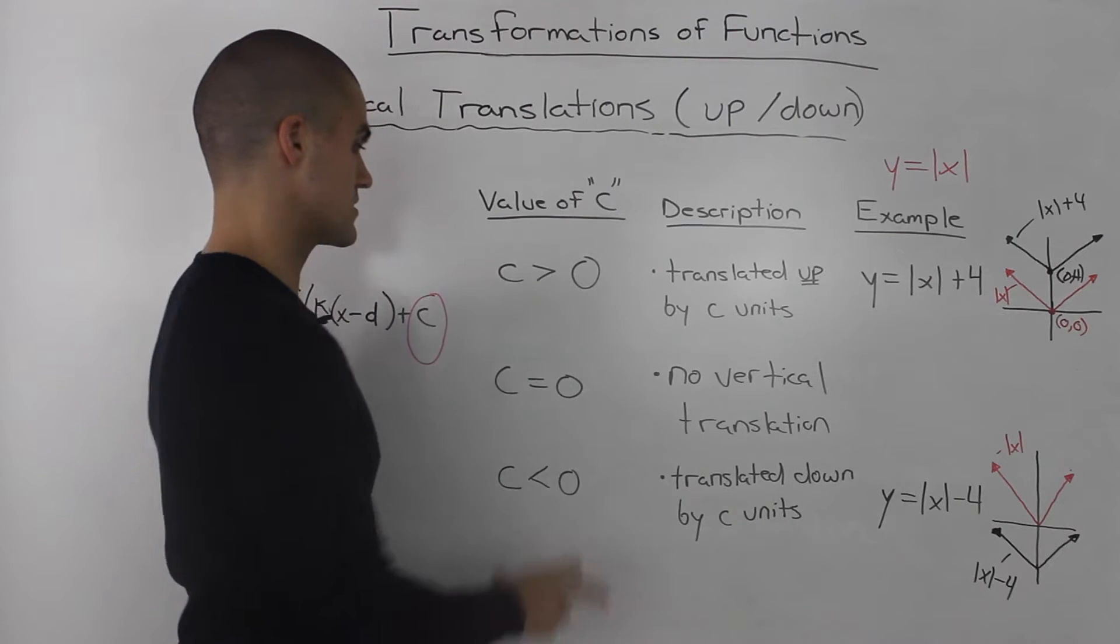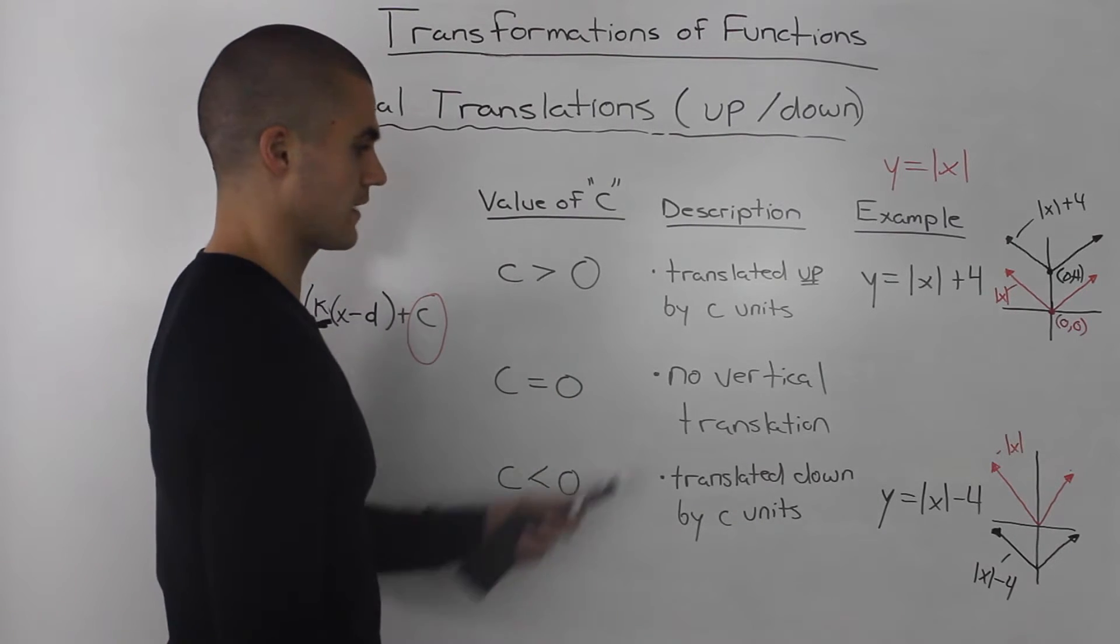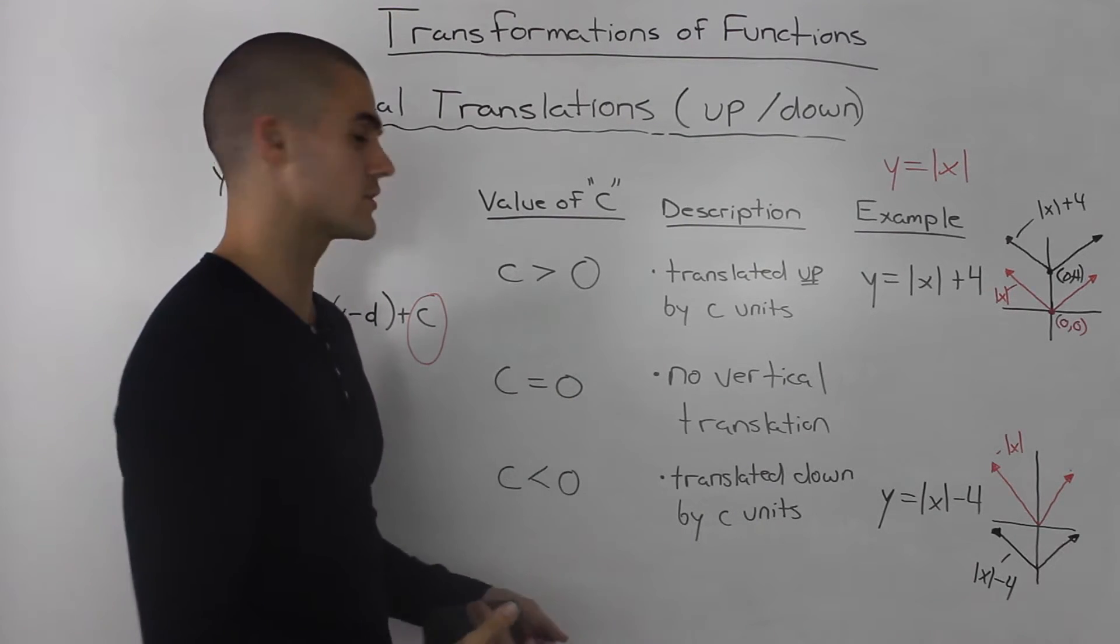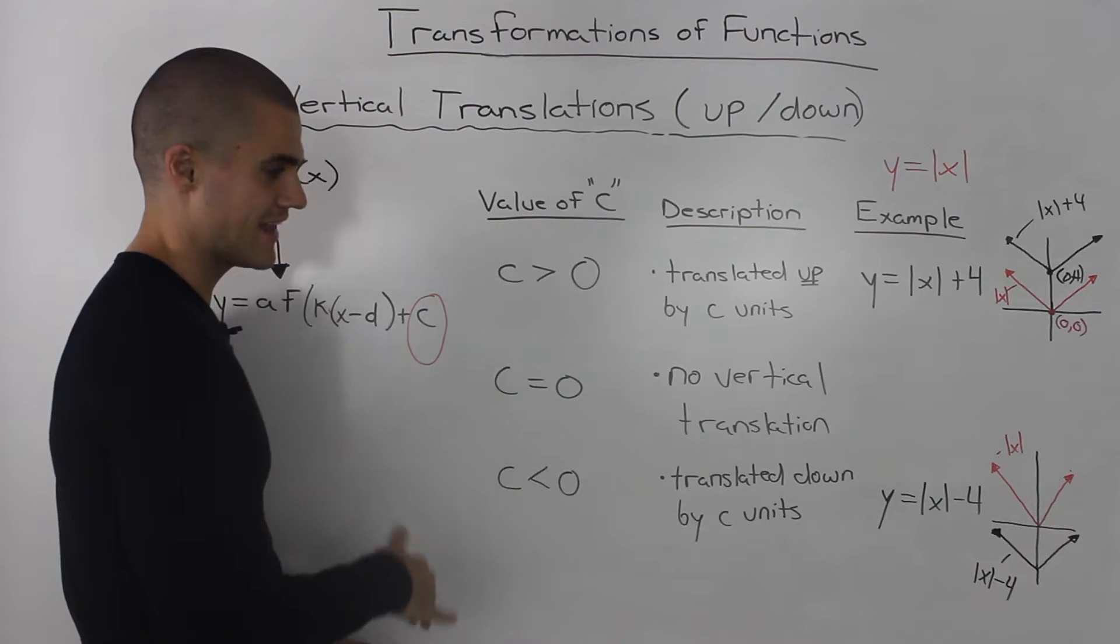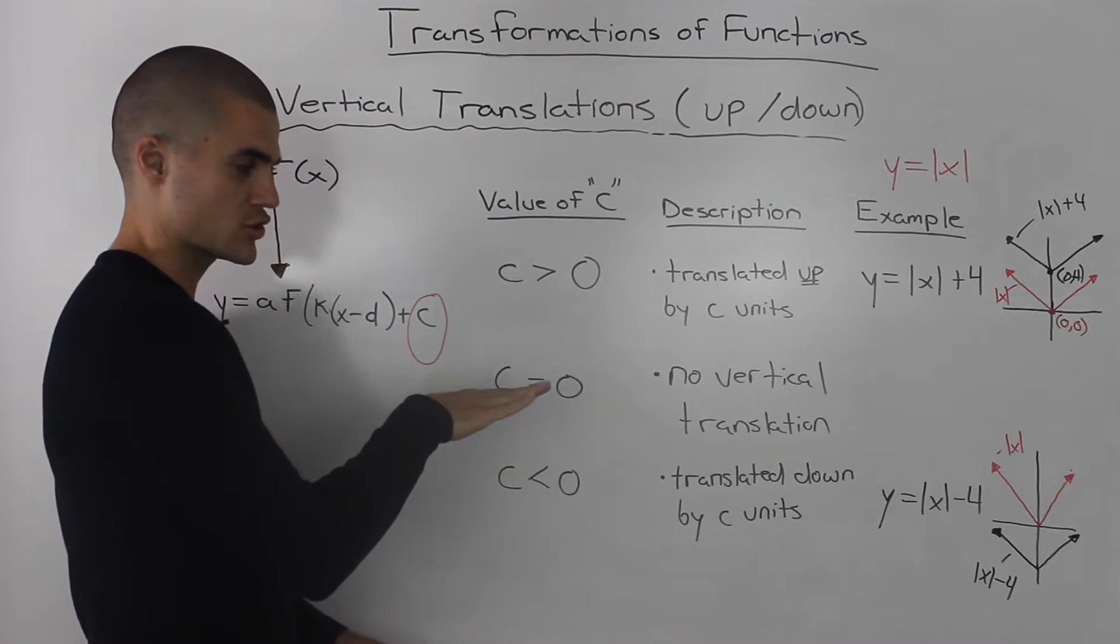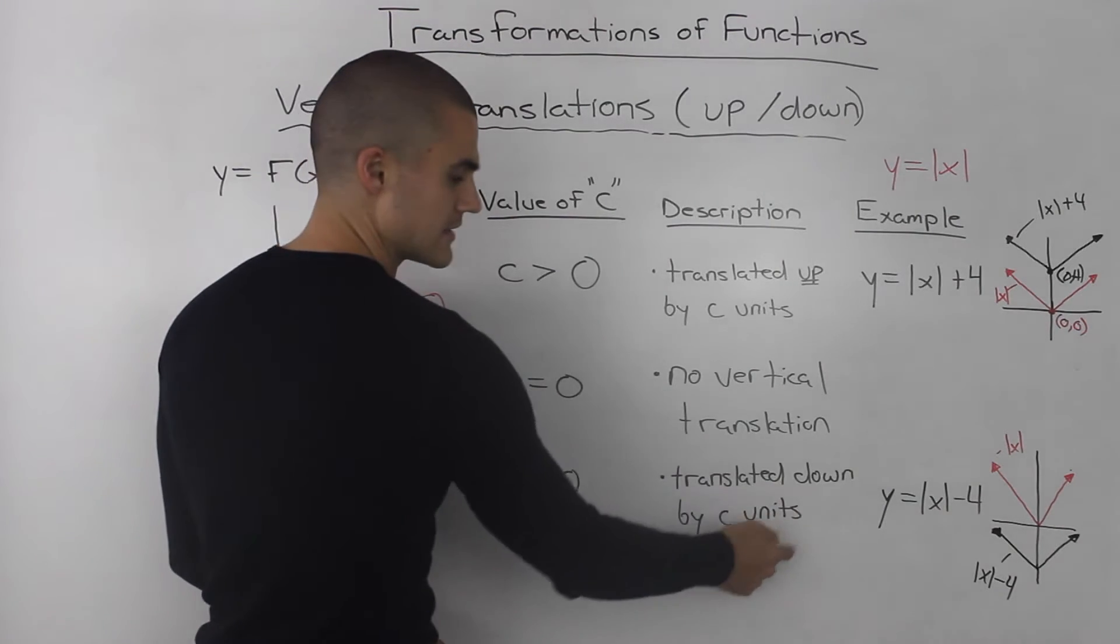Dealing with the other cases, if C is equal to zero, there is no vertical translation—the function doesn't move up or down. If C is less than zero, the function moves down by C units.